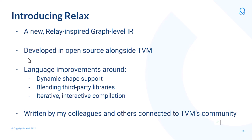So I want to introduce Relax, which is a new Relay-inspired graph-level IR. This has been developed in the open source alongside TVM. Relax brings language improvements around dynamic shape support, blending third-party libraries into your code, as well as an iterative interactive compilation process. Relax has been authored primarily by my colleagues and others connected to the TVM community — I'm presenting it here as something we think will be useful in the TinyML context.